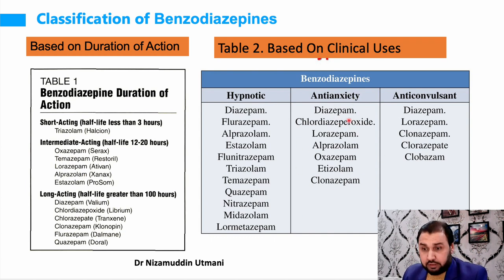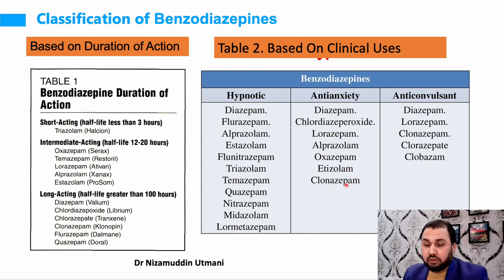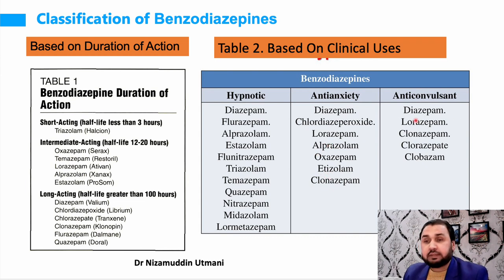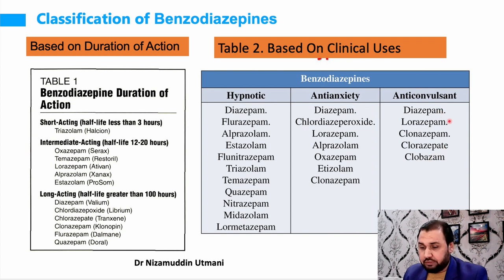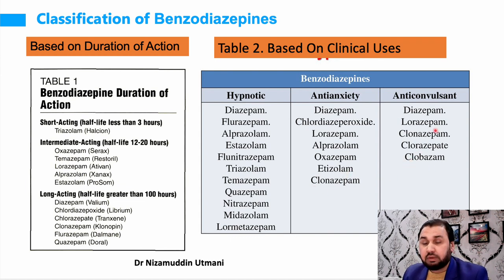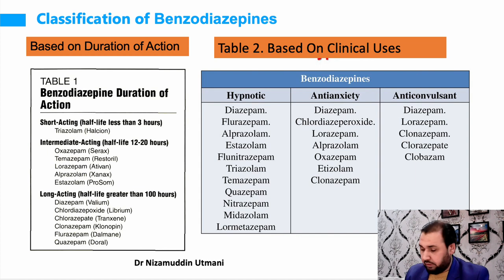Some benzodiazepines are used for anxiolytic purposes: diazepam, chlordiazepoxide, lorazepam, alprazolam, oxazepam, etizolam, and clonazepam. Some are used as anticonvulsants: lorazepam (Ativan), diazepam (Valium), clonazepam, clorazepate, and clobazam. Clonazepam is available as Rivotril. For pre-anesthetic medication, along with atropine-like drugs for drying secretions, we commonly use midazolam, diazepam (Valium), or lorazepam (Ativan).